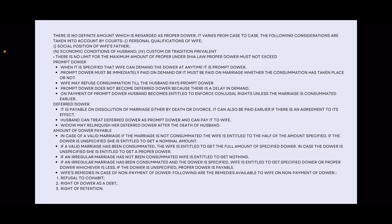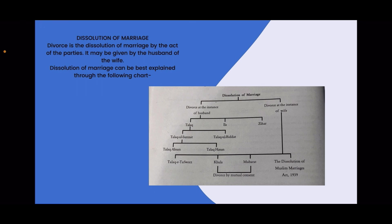If Dahr is not paid, the wife has remedies: the first remedy is refusal to cohabit. The right of Dahr is a debt, and the wife has the right of retention. The right of retention will be available until Dahr is paid.